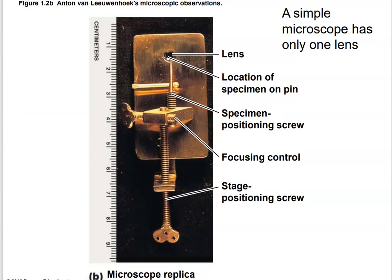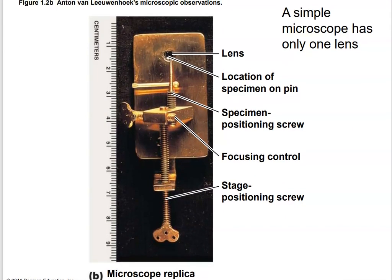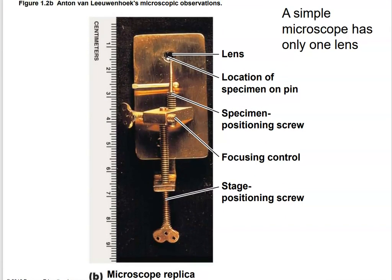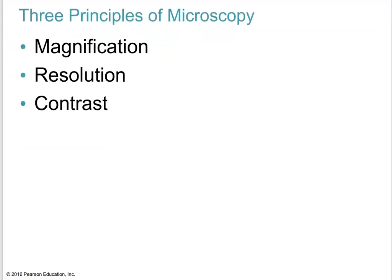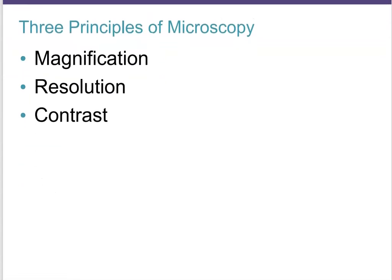Here is that ancient microscope. Anton van Leeuwenhoek was the one who first put this together, and it's probably in a museum somewhere. Take a look at that lens. The three principles of microscopy — magnification, resolution, and contrast — make sure you know those because I will be testing you on that in a quiz.